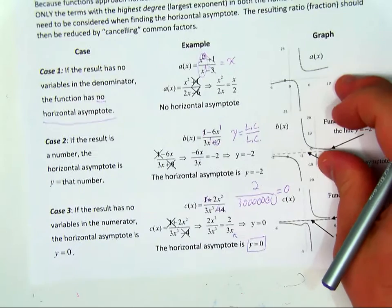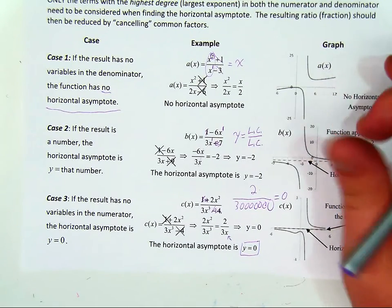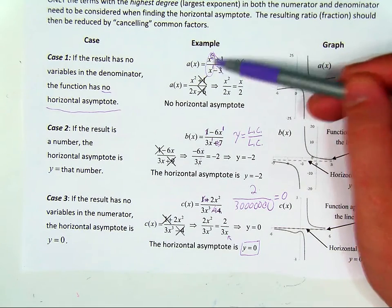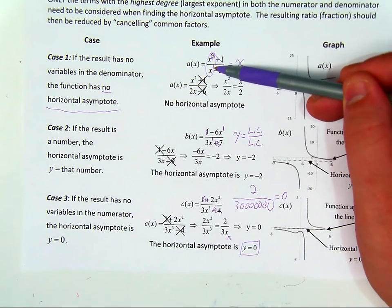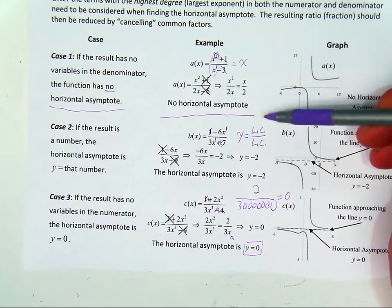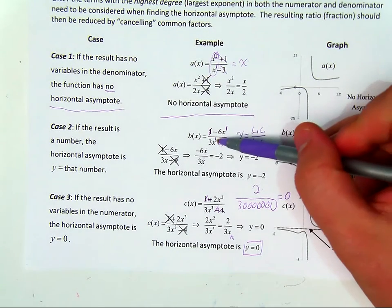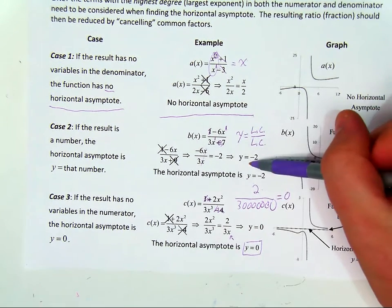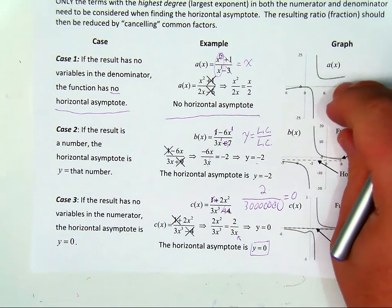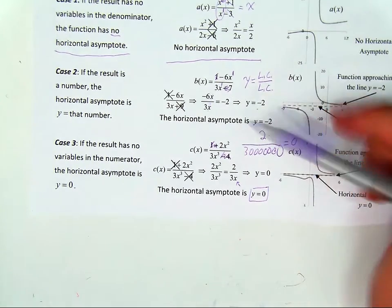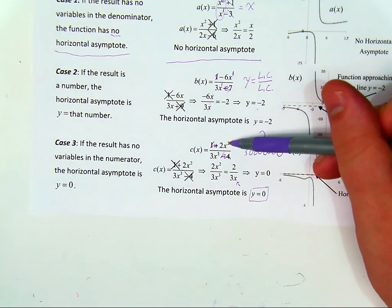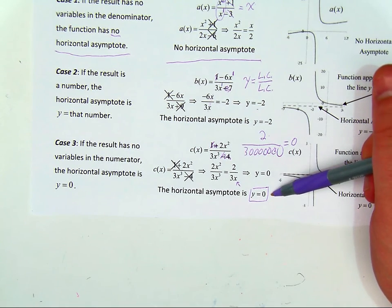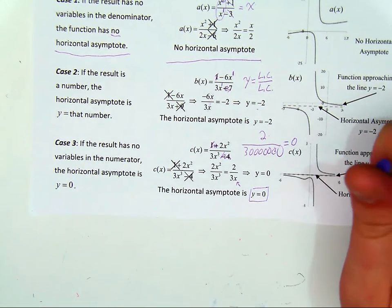In summary, there are only three cases for a horizontal asymptote, and they all have to do with comparing the degree of the numerator to the degree of the denominator. If the degree of the numerator is bigger, there is no horizontal asymptote. If the degrees match, divide the leading coefficients and y equals that number is the horizontal asymptote. If the degree of the denominator is bigger, you will always get a horizontal asymptote at y equals 0.